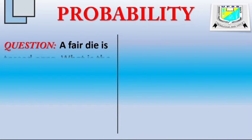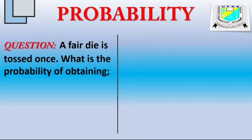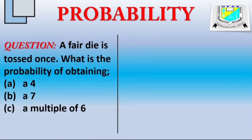Now, the first question says that a fair die is tossed once. What is the probability of obtaining a 4, a 7, a factor of 6, and lastly, a prime number?